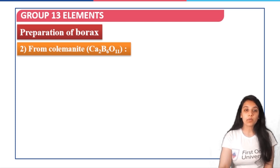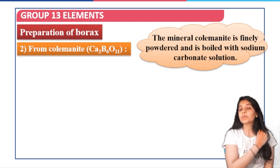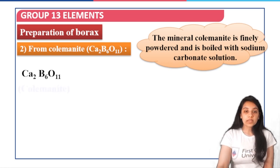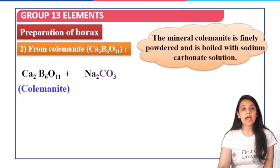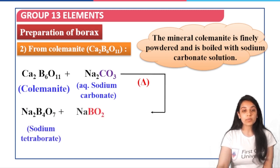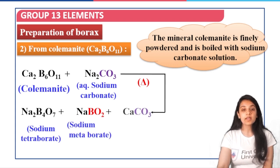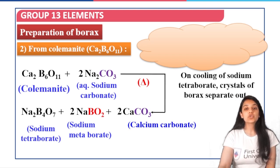The second method is from colemanite, Ca2B6O11. The mineral is finely powdered and boiled with aqueous sodium carbonate (Na2CO3). On heating, it produces sodium tetraborate (Na2B4O7), sodium metaborate (NaBO2), and calcium carbonate. On cooling, crystals of borax separate out.